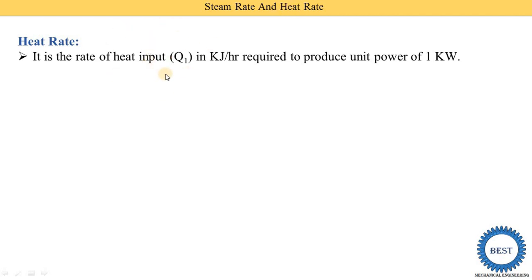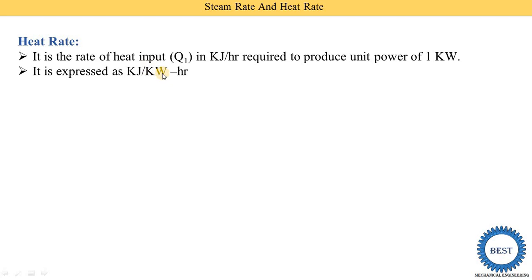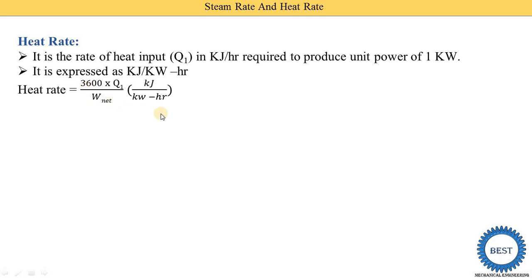The heat input is denoted as q1, and its unit is kilojoule per hour. Unit power means 1 kilowatt, so the unit of heat rate is kilojoule divided by kilowatt-hours. The equation is: heat rate equals q1 divided by W_net, or divided by unit power.